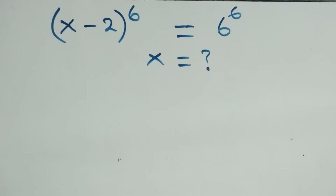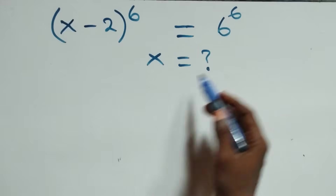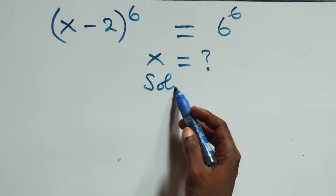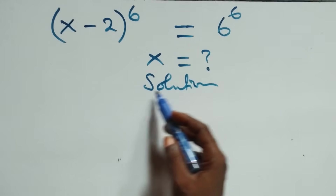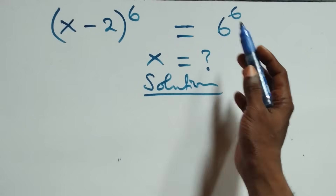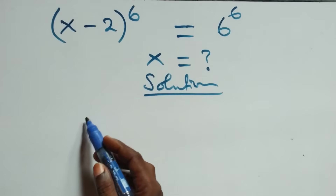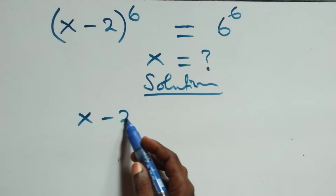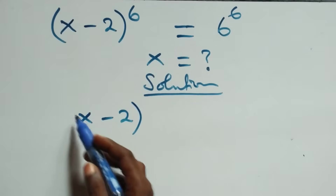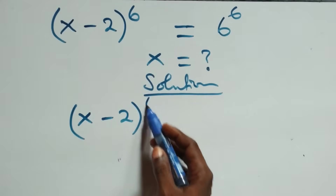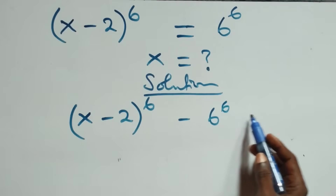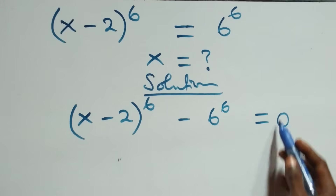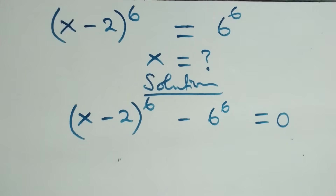Hello, you are welcome. How to solve this nice exponential equation. From what we have here, we take the right-hand side to the left-hand side, and we have x minus two, raised to power six, minus six raised to power six, then equals to zero.